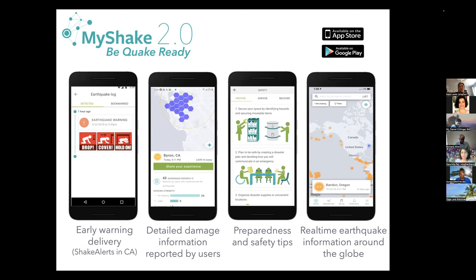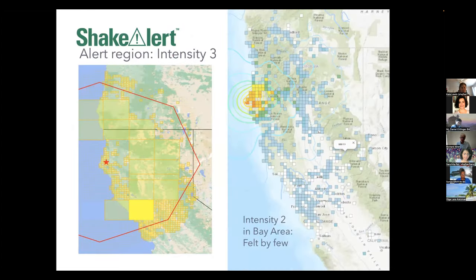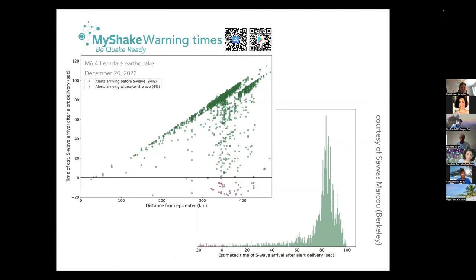For the largest earthquake ShakeAlert has issued an alert for so far — a magnitude 6.4 Ferndale earthquake — people in the Bay Area received over 100 seconds of warning. In small earthquakes you may get a few seconds; in larger earthquakes you could have a minute or more of warning.